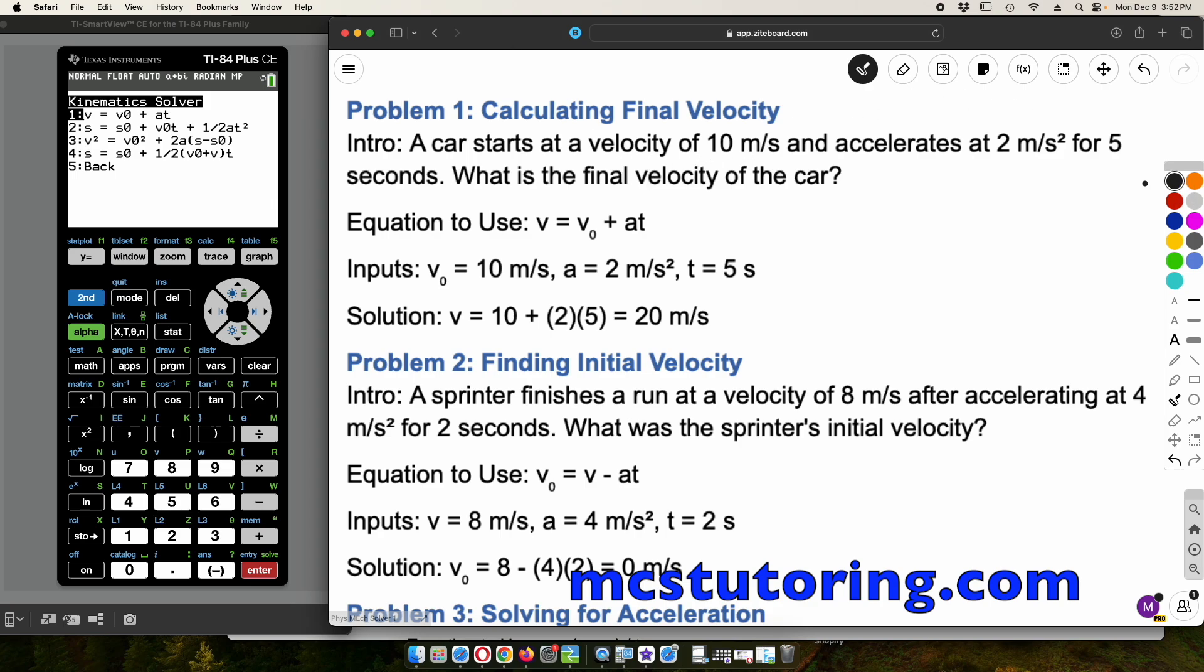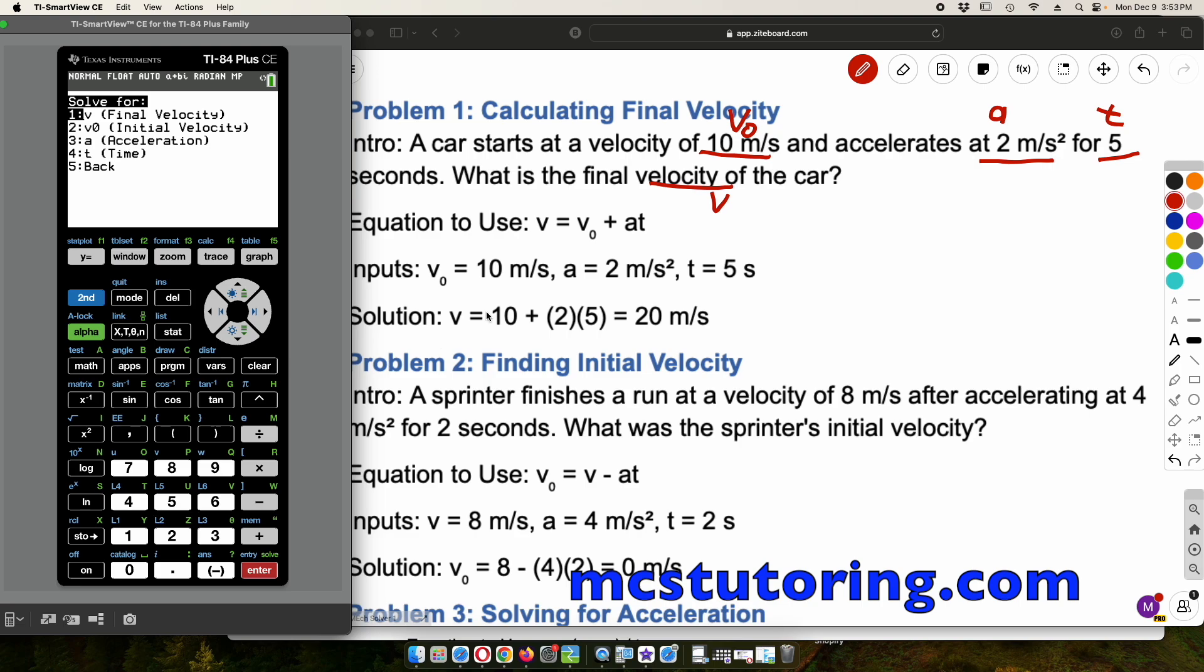For example, I'll give you this one. So starts at a velocity of 10 meters per second. That's velocity initial, V0. Accelerates at 2 meters per second squared. That's the A. For 5 seconds, that's the T. And then what's the final velocity? That's the V. So we need an equation with V0, A, T, and V. And that's going to be that first one there. And then the cool thing is we can solve for anything we want.